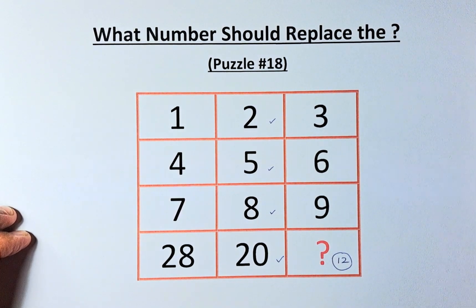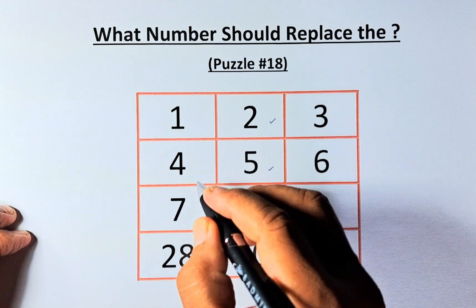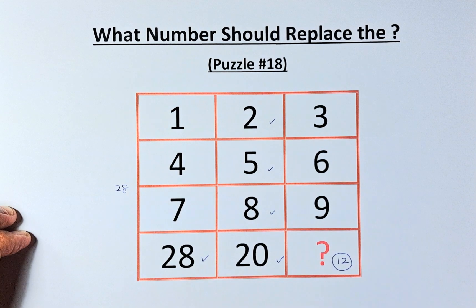Now, we look at the column. The second solution is when we look at the column. To get 28 from 1, 4, 7, we're going to take 4 times 7, which gives us 28, and then divide by 1. That will give us 28.